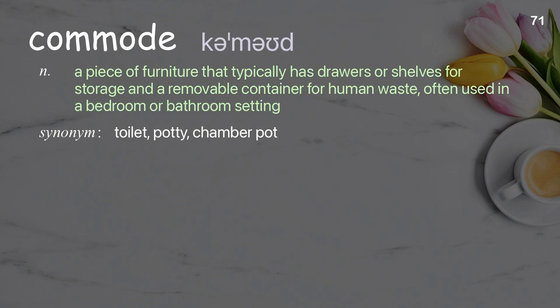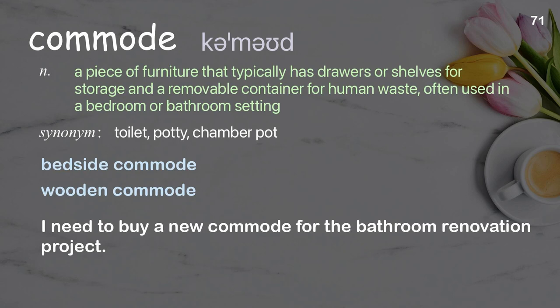Commode: A piece of furniture that typically has drawers or shelves for storage and a removable container for human waste, often used in a bedroom or bathroom setting. Examples: bedside commode, wooden commode. I need to buy a new commode for the bathroom renovation project.